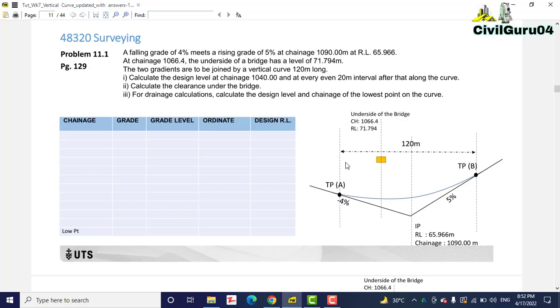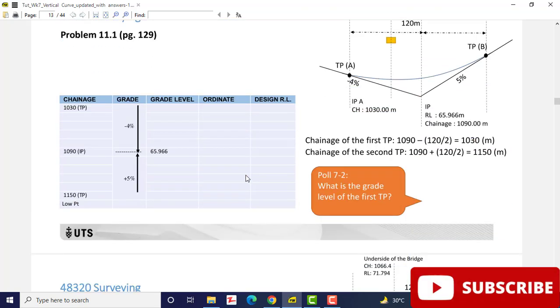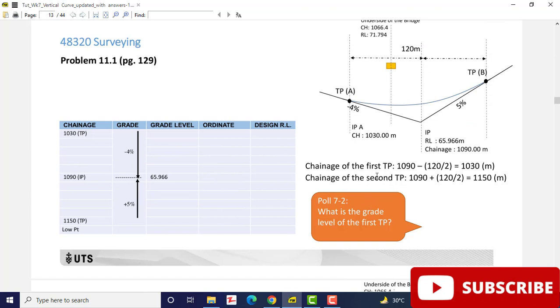The second thing we need to calculate is the clearance under the bridge, and then the lowest point of the curve for drainage calculations. We will solve this example step by step. First of all we need to calculate our chainage for TP.